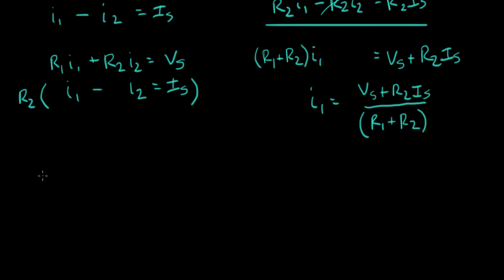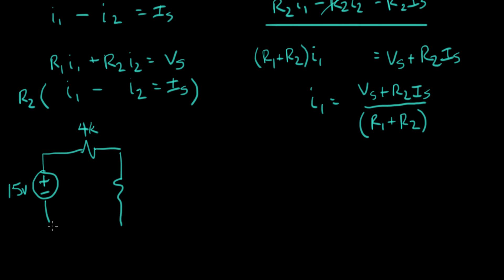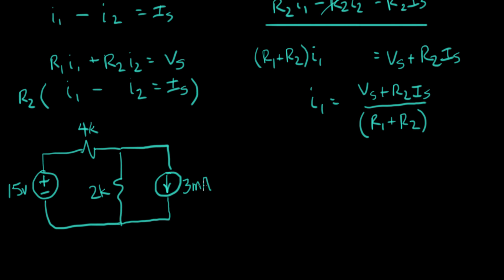Let me sketch the real circuit again. We have a voltage source of 15 volts, connected to a 4K ohm resistor (R1), a 2K ohm resistor (R2), and a current source of 3 milliamps. We want to find the two unknown currents: I1 and I2.